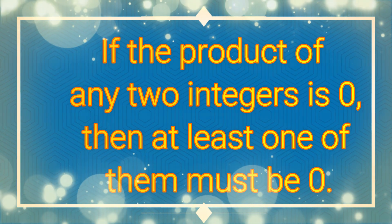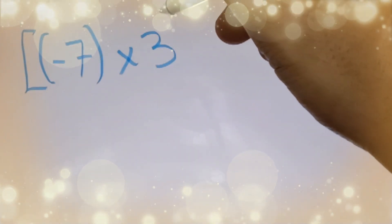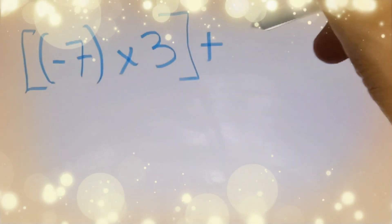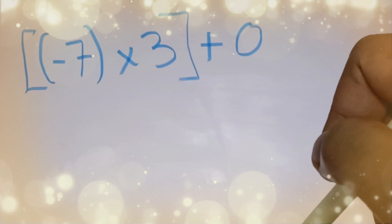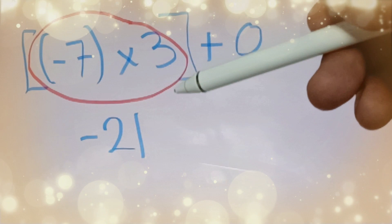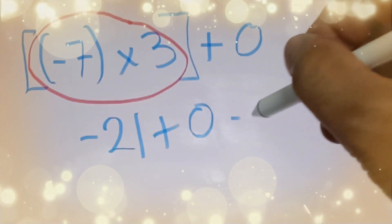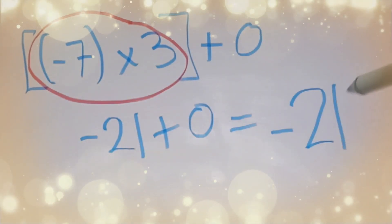If the product of any two integers is 0, then at least one of them must be 0. For example, negative 7 times 3 plus 0: we simplify negative 7 times 3 first, which is negative 21, and then add 0. So negative 21 plus 0 is equal to negative 21.